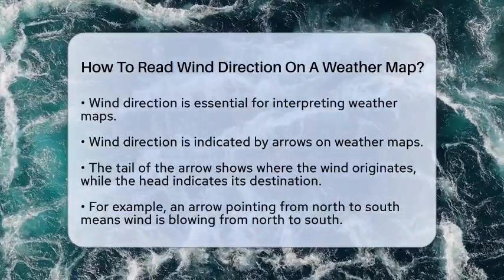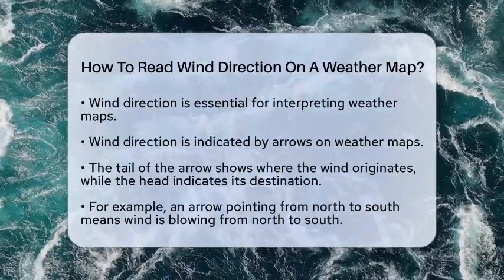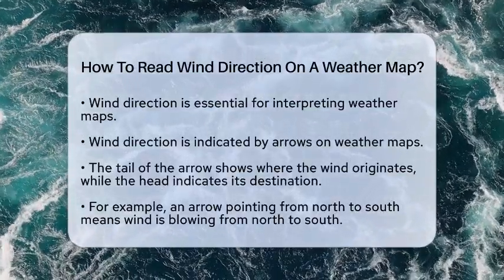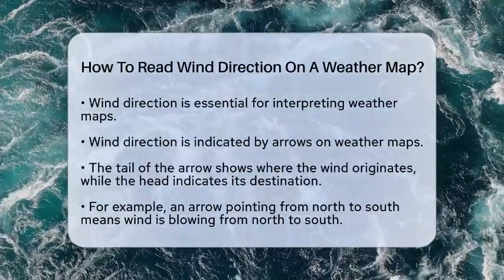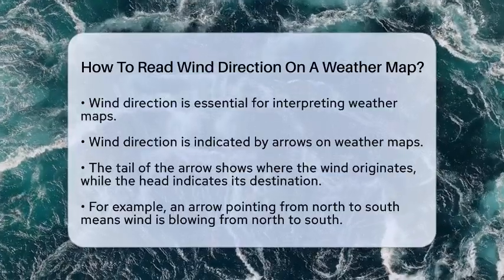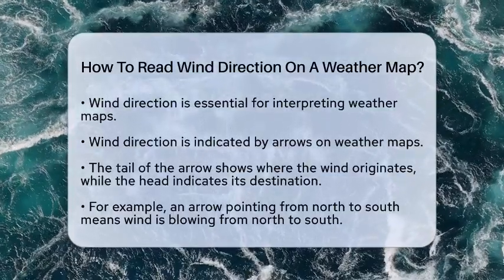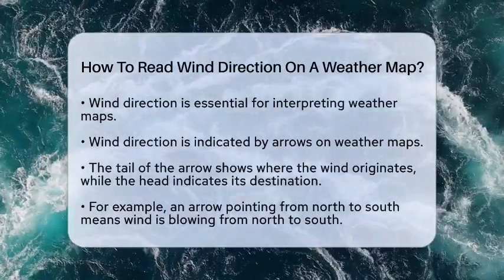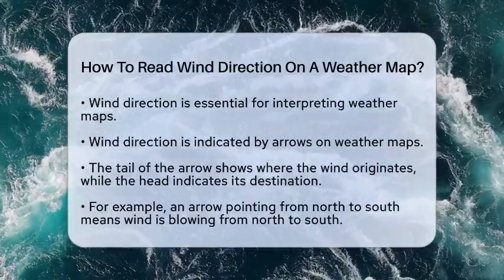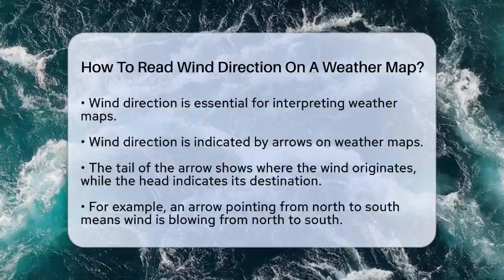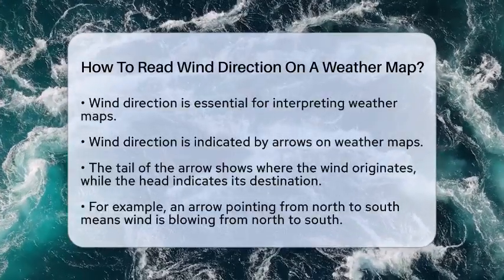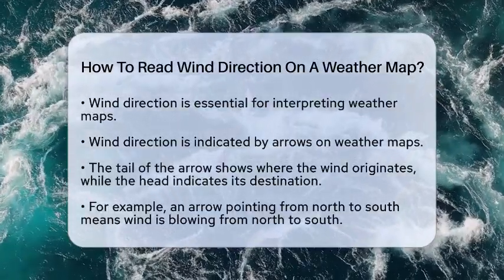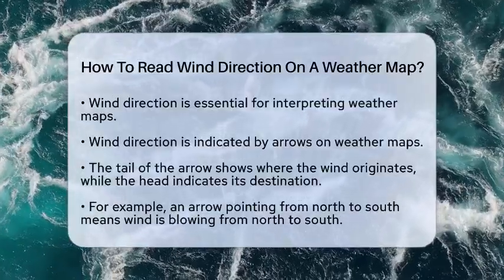First, wind direction is often shown using arrows. These arrows indicate where the wind is coming from and where it is headed. The tail of the arrow points to the origin, while the head shows the destination. For example, if an arrow points from the north to the south, the wind is blowing from the north toward the south.